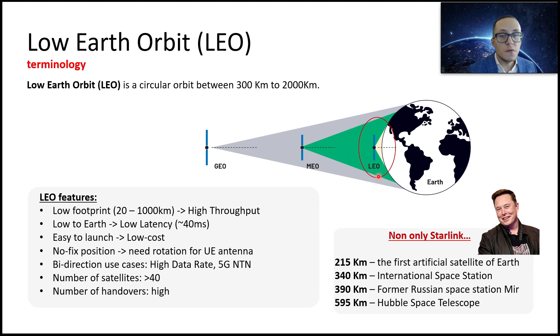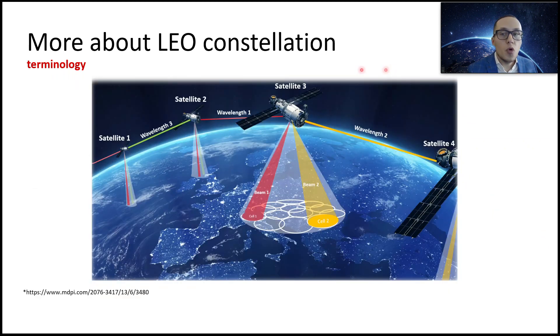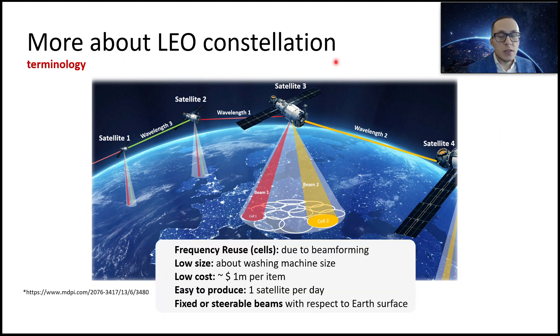Now let's talk a little bit more about LEO constellation. What else is interesting here? We can use frequency reuse for beamforming techniques, for developing multiple cells with multiple identifiers. And it can actually gain capacity of the whole system. Satellites are relatively low size, about washing machine size. They could be low cost. For example, OneWeb company said it requires about one million dollar per item. So this is not huge cost for satellite.